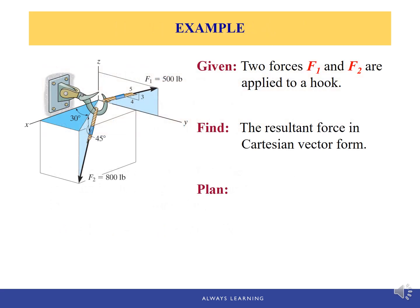Let's see one example. Two forces, F1 and F2, are applied to a hook, and we're looking for the resultant force in Cartesian vector form — in other words, we're looking for a force R equal to something i-hat plus something j-hat plus something k-hat. To find it, we need to write each force in Cartesian vector form and then add their corresponding components together.